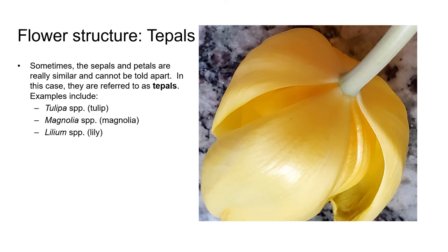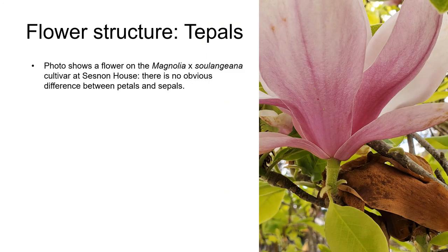Here's a picture of a tulip showing tepals — you can't see any separate sepals at the top of the stem; the petals and sepals look identical. Other examples of plants with tepals include magnolia and lilies. Here's a photo of Magnolia soulangeana on the Cabrillo campus showing no obvious difference between sepals and petals.